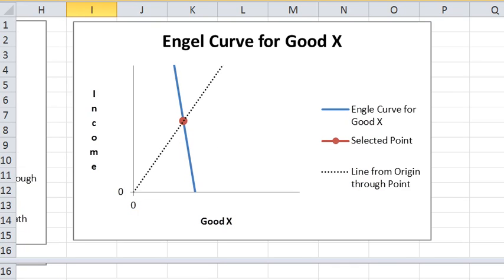As I move income up, the choice point changes and I move along the Engel curve. This is the line from the origin to the curve that helps you think about the income elasticity, and the Engel curve shows the relationship of income to consumption of good X. So there you are.